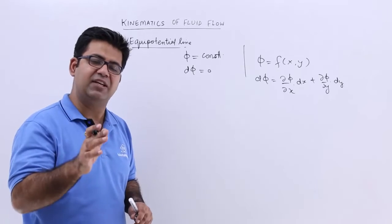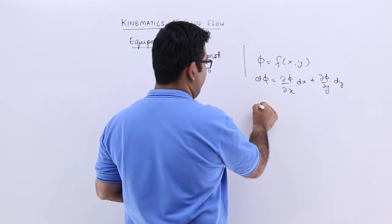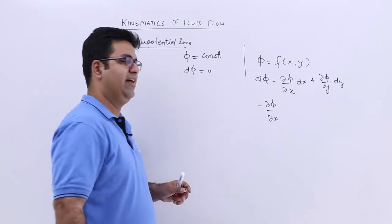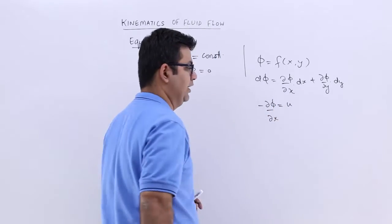So, if you remember the definition of the velocity potential function, that is, if you find the negative derivative of phi with respect to some direction, you get the velocity in that direction.